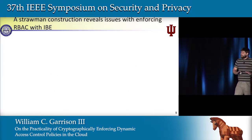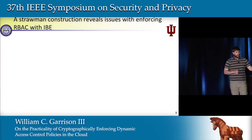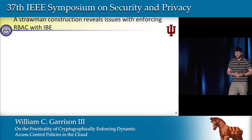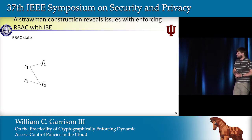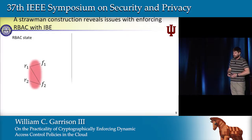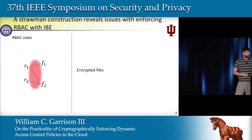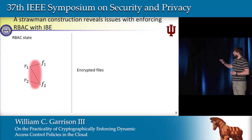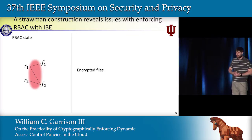Let's take a look at a strawman construction of how we could represent and enforce RBAC using identity-based encryption. Looking at the PA relation, we can grant file accesses to a role using IBE by encrypting the file to a shared role identity. If a number of users share this identity, we can encrypt this file to that role, and then all of those users will be able to access that file.